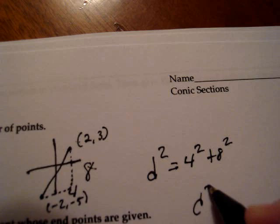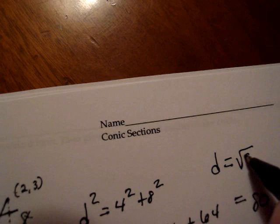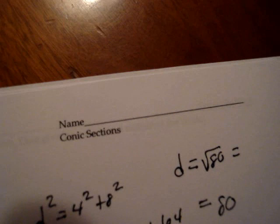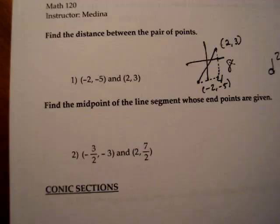So now the distance squared is going to equal 16 plus 64 which is, wait don't tell me, 80. And then we'll take the square root of 80 so distance is equal to the square root of 80. And you want to simplify that as much as possible. And it turns out that 80 is 16 times 5 so that will be 4 root 5. So there is a review of the distance formula.